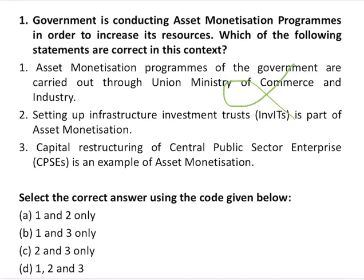The second statement says setting up infrastructure trusts is a part of asset monetization — this statement is correct. The third says capital restructuring of central public sector enterprises is an example of asset monetization — this statement is also correct. So statements two and three are correct, making C the correct answer.